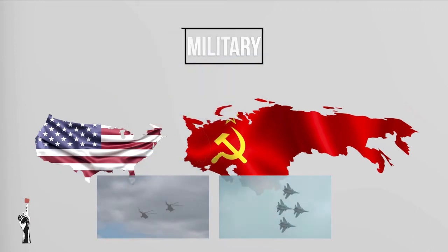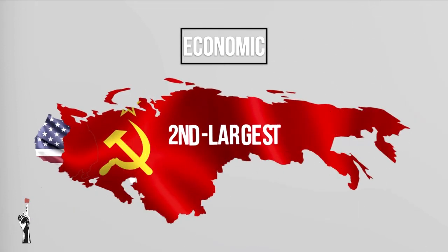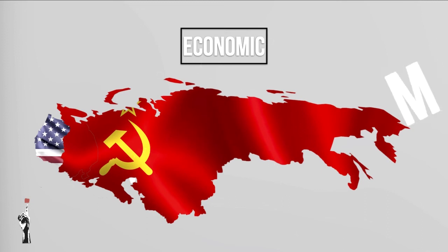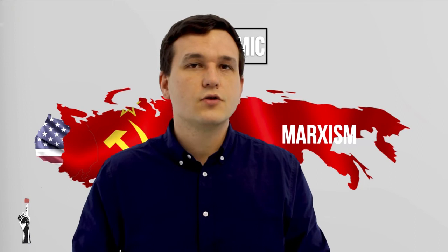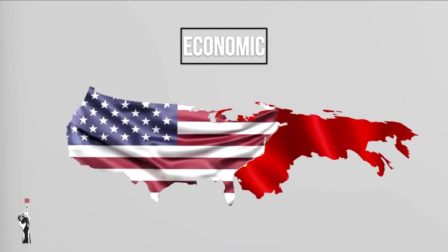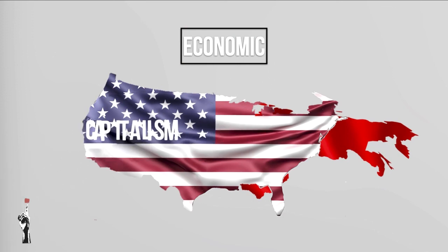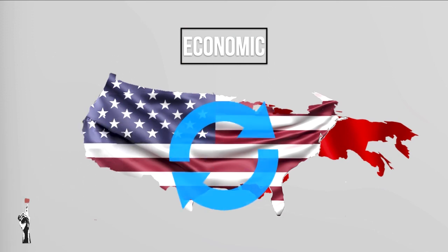Now let's look at the two nations economically. The Soviet Union was the second largest economy in the world, based on Marxism, and was generally self-sufficient — not dependent on imports from other countries. The USA had the largest economy in the world and had loads of imports and exports. Their economy is based on the free market system of supply and demand. That's all for lesson five — we'll see each other next time.